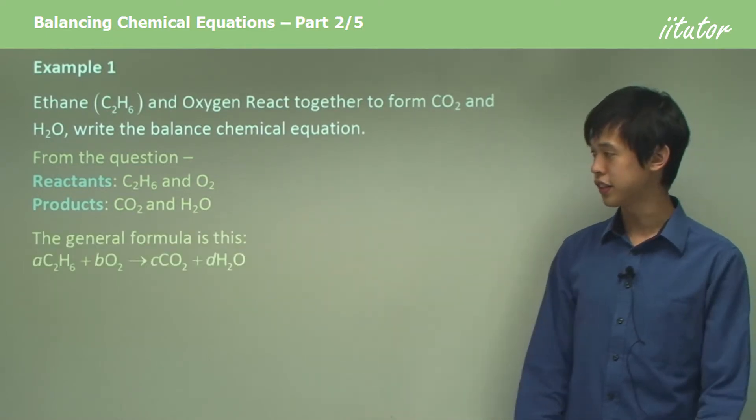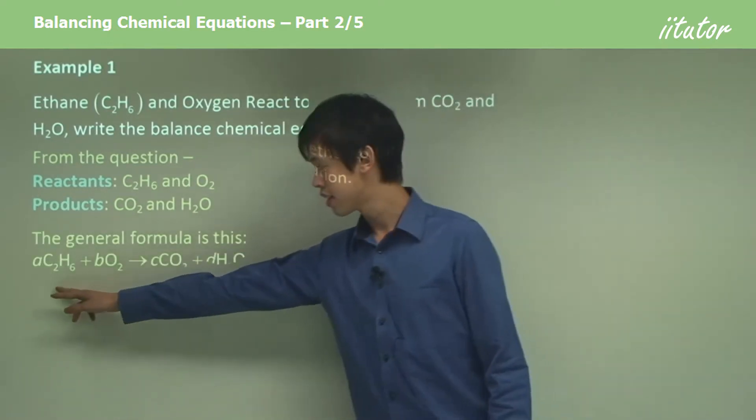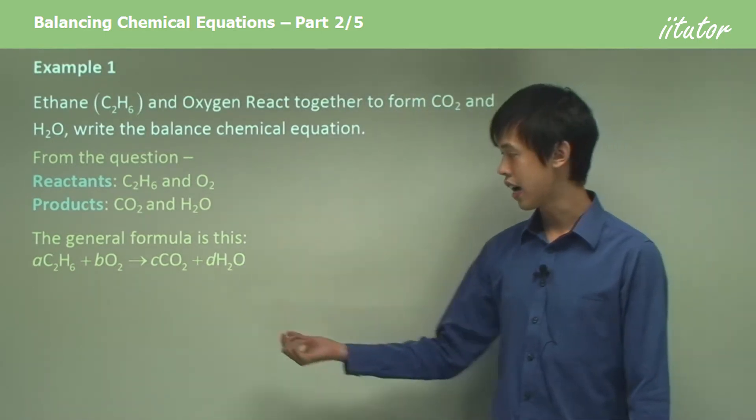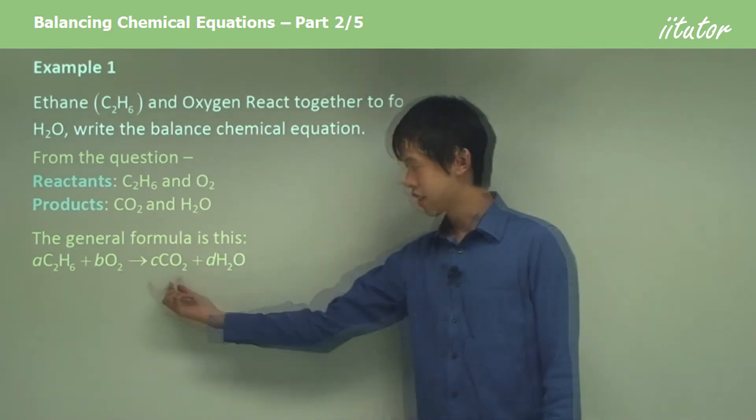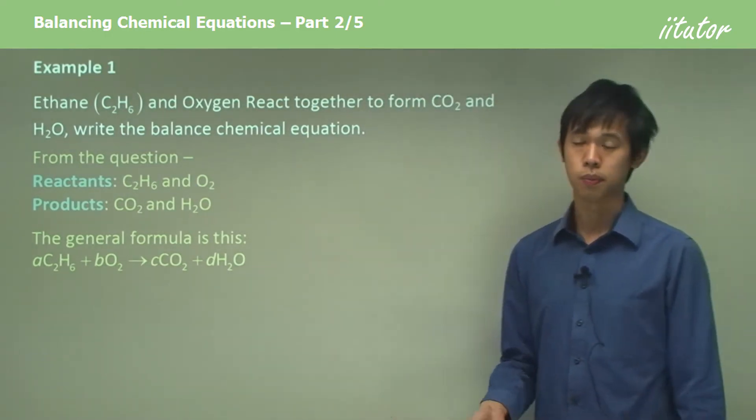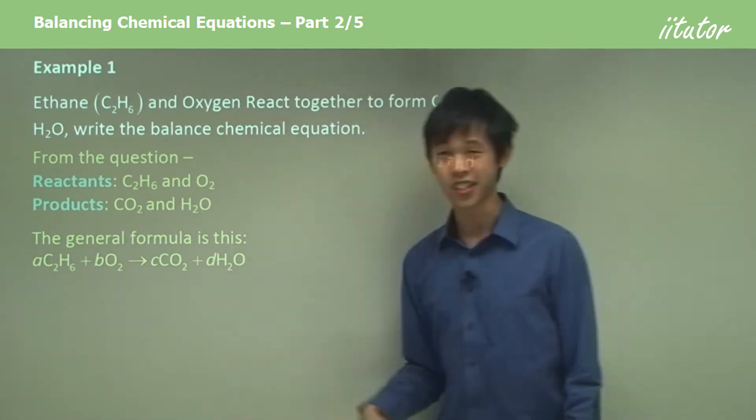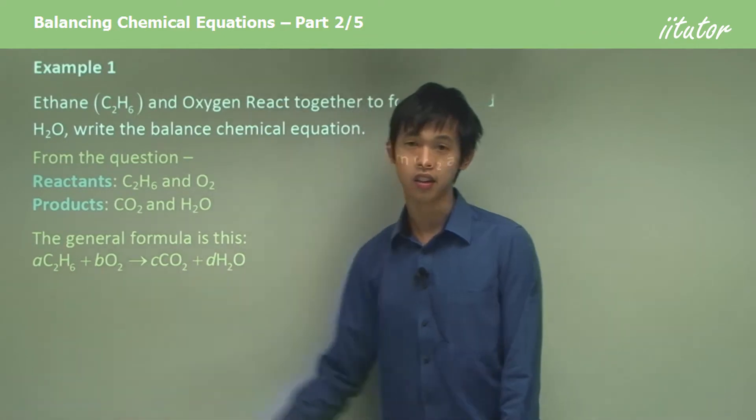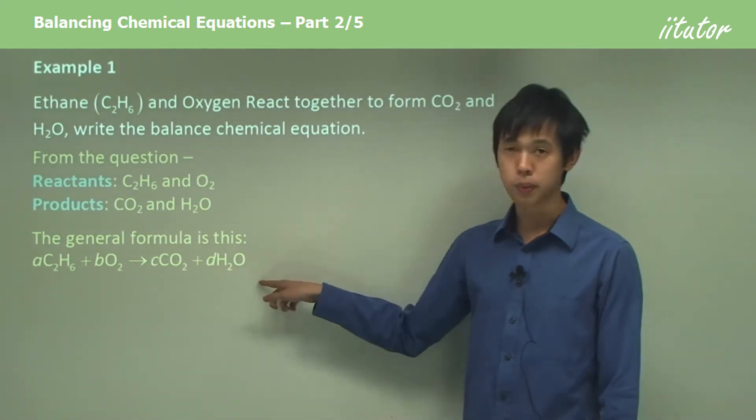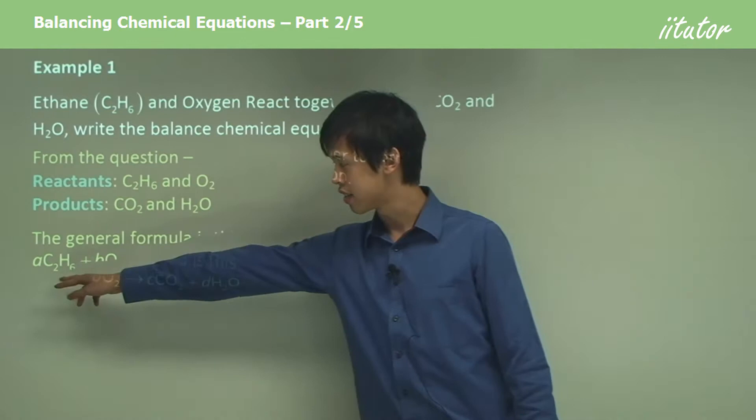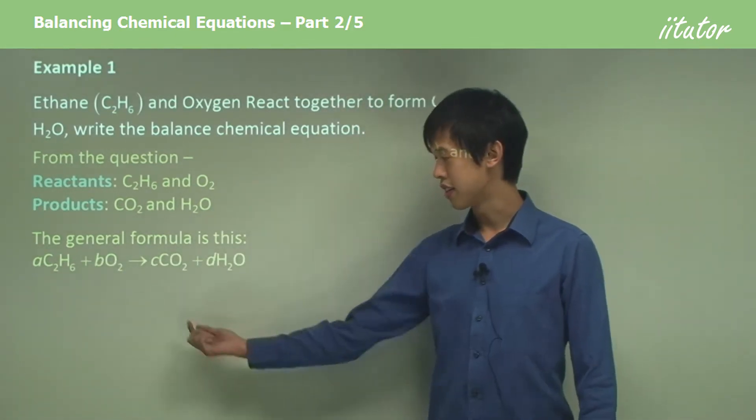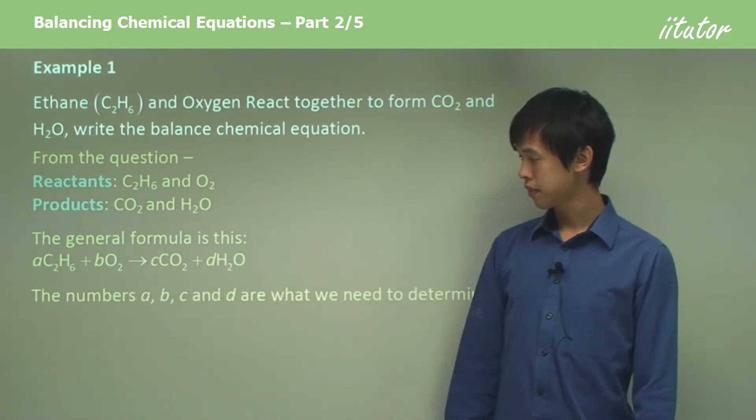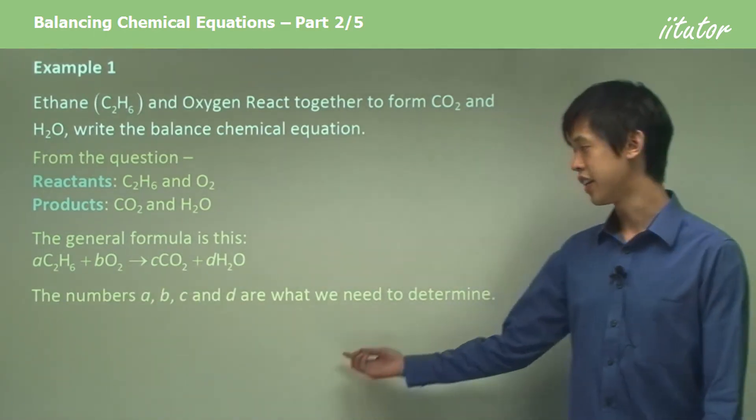If we put it into a general equation we'd have this: A times the fuel plus B times the oxygen molecules gives you C times CO2 molecules and D times H2O. So what these numbers A, B, C and D mean are just how many of these molecules do we need. If I needed one H2O molecule and six CO2, then C would be six and D would be one. We're looking to find A, B, C and D. That's the goal of this whole process.